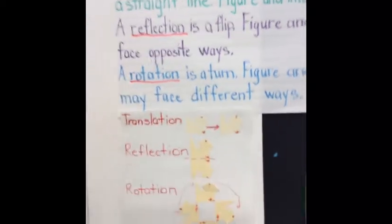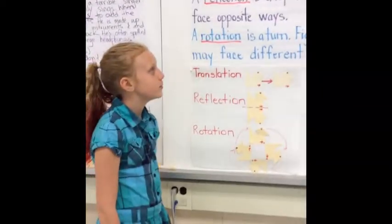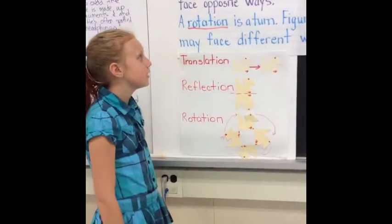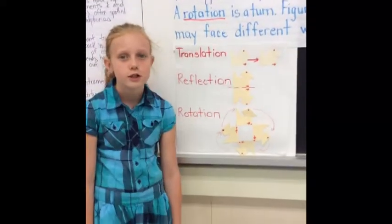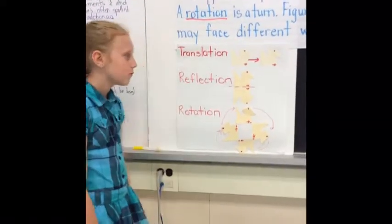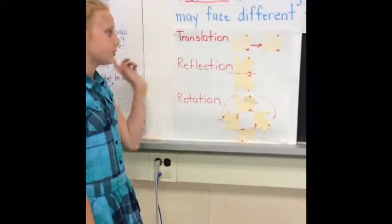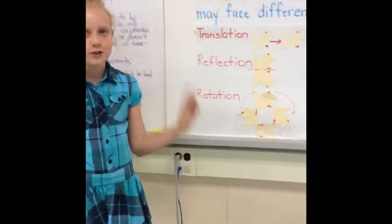We also learned about transformations — moving shapes along lines, reflections, and rotations. That's an example of translation, reflection, and rotation.